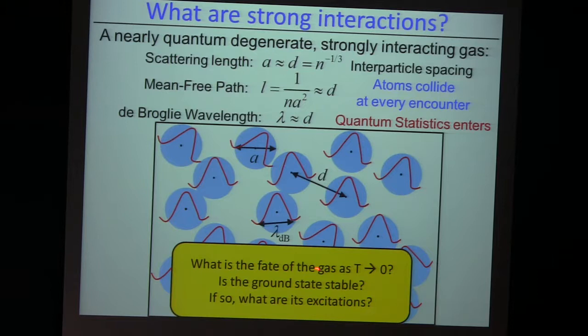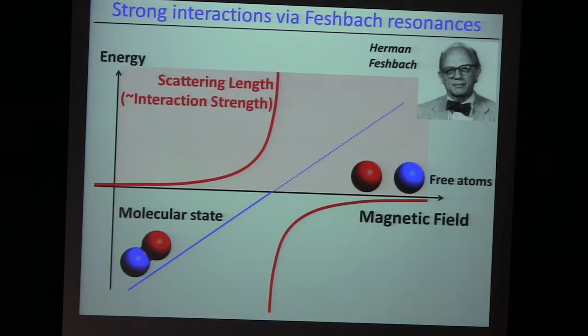So when all three length scales — the scattering length, the de Broglie wavelength, and the interparticle spacing — become on the same order, then interesting states of matter emerge that we actually have a hard time understanding theoretically. The various questions we always ask: what happens when I go to zero temperature? Is there something interesting? Is the ground state of such a gas stable?